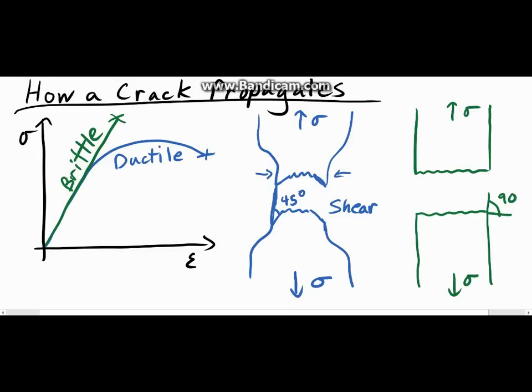Now, this tells us that this sample failed under normal stress, particularly under tension. And that's actually how cracks propagate. It's under tension.